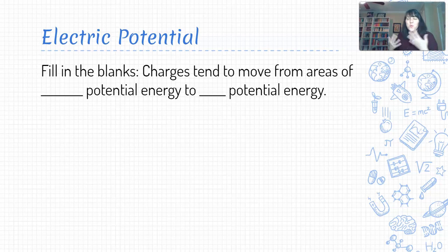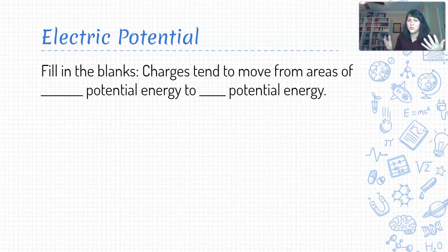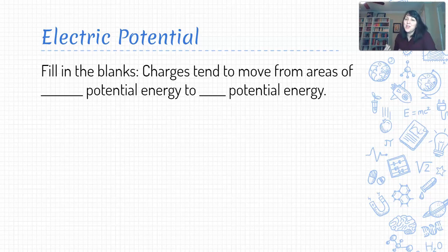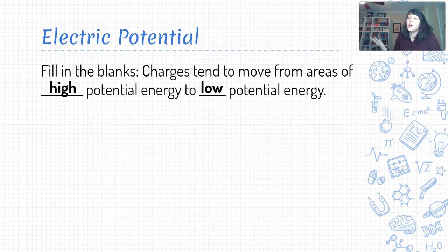Now let's dive into what that actually means — why a battery always produces direct current while an oscillating power source creates alternating current. Thinking back to fields and energy: charges will tend to move from areas of high potential energy to areas of low potential energy. Much like objects with mass in gravitational fields, charges move from high to low potential energy — charges, like us, are lazy and seek out the lowest energy state possible.